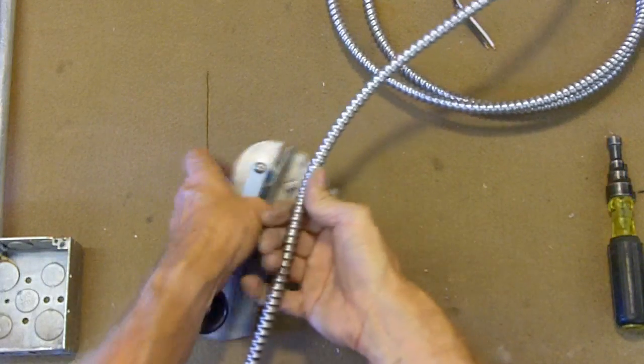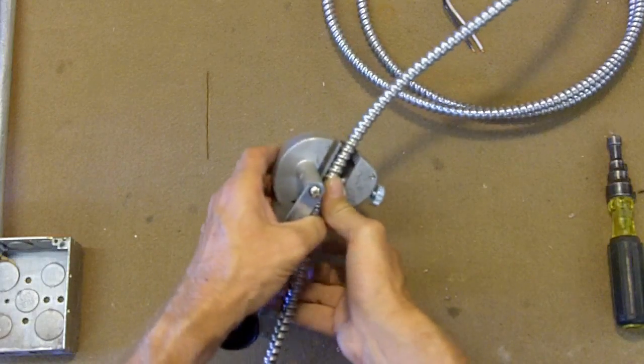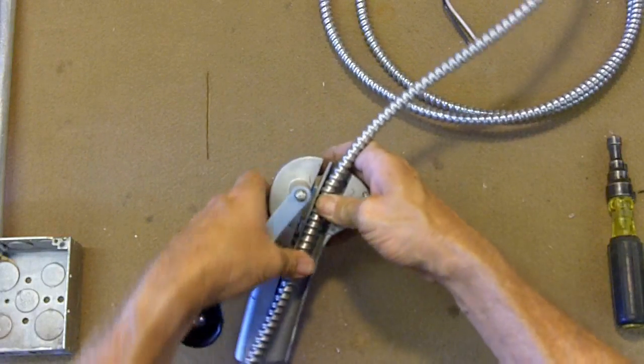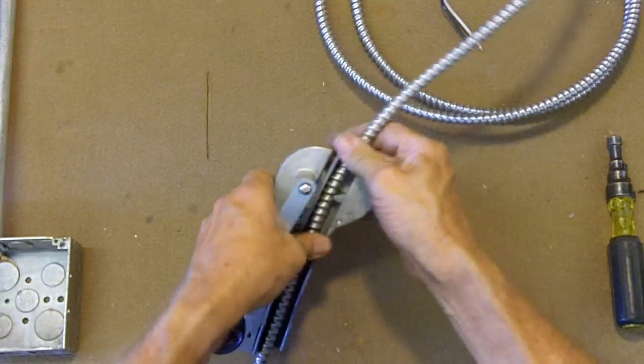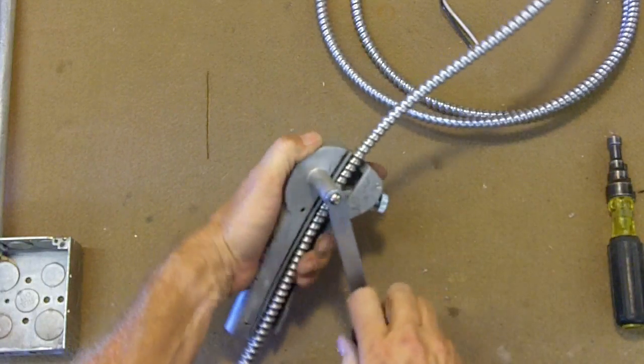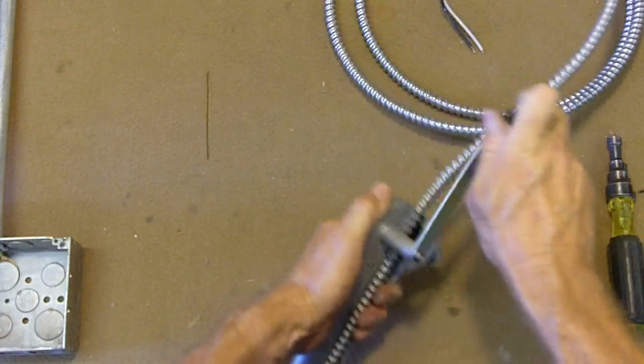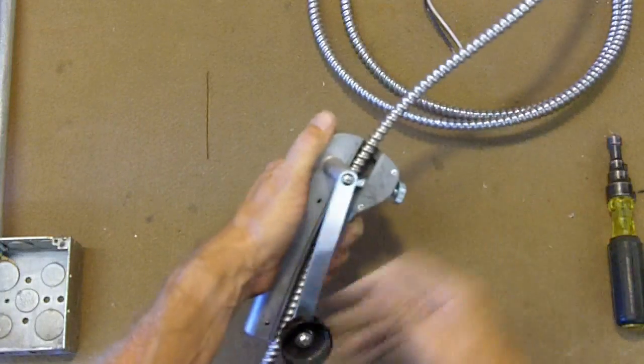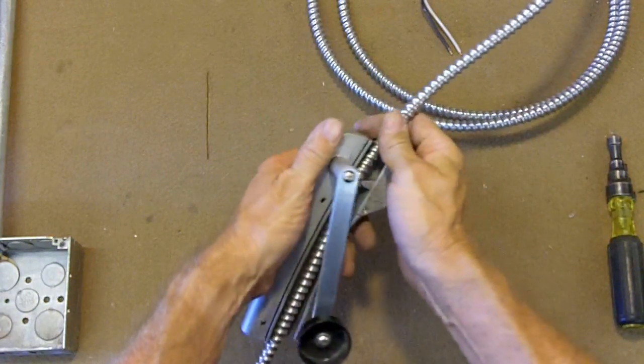And what I want to do is show you the EMT splitter or the MC splitter here. You can put that down in there and just make sure that it fits in right. And then all you do is take it and spin it a couple times and you'll hear it snap. There's other ways to do this.